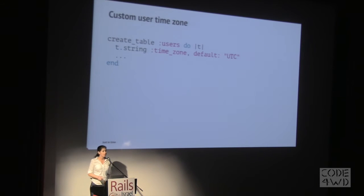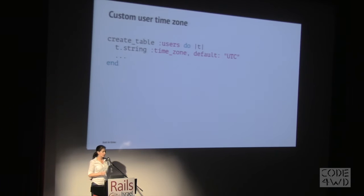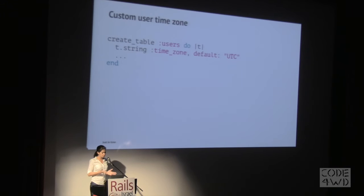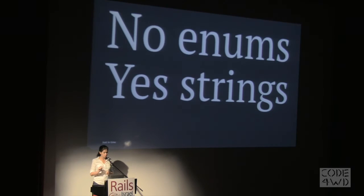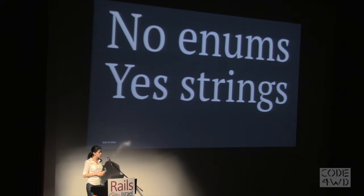The idea is to keep your Rails app in UTC and then let your user set their own time zones. We can do that by adding an attribute to user for time zone and set the default to be UTC. We want it to be strings and not enums because all the time-related functions in Rails use strings — so please stick with strings.